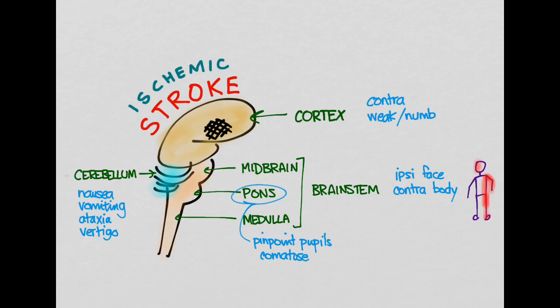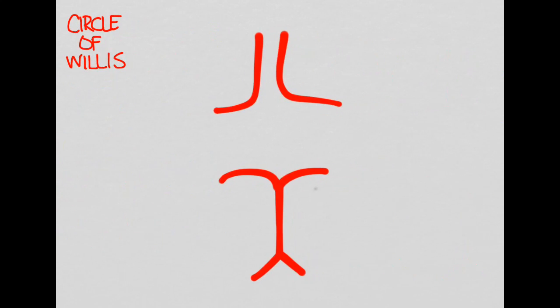So here we looked at different stroke syndromes based on where they might be in the brain. But we could subdivide this cortex a little bit more in more detail by blood vessels as well. And that brings us to our old friend, the circle of Willis.